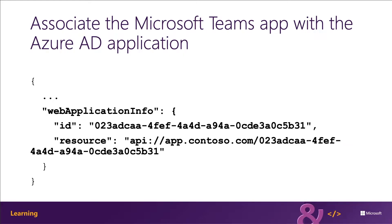There are two parts to this section that must be updated for your application. The ID — which is the client ID of the registered Azure AD application — and the resource, which is the URL of the app. This is the same URI that was used when registering the app in Azure AD. The domain portion of the URI must also be listed in the valid domains array of the app's manifest.